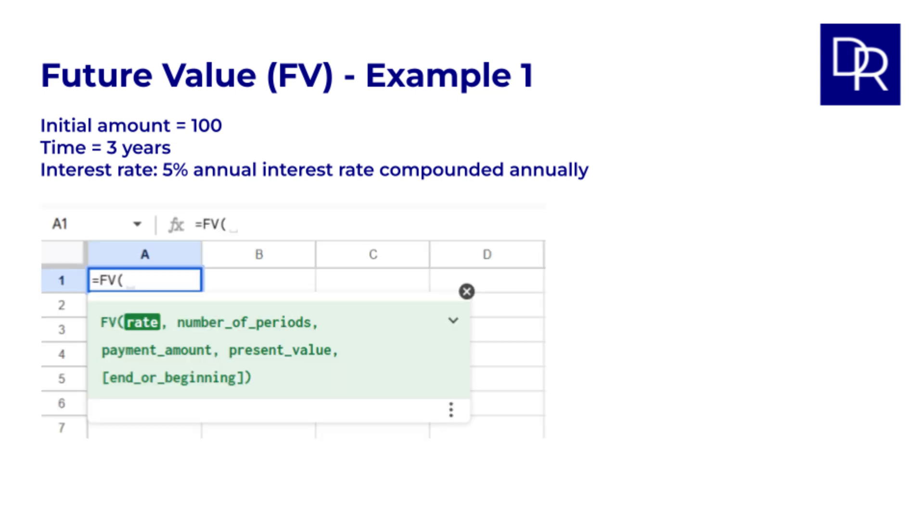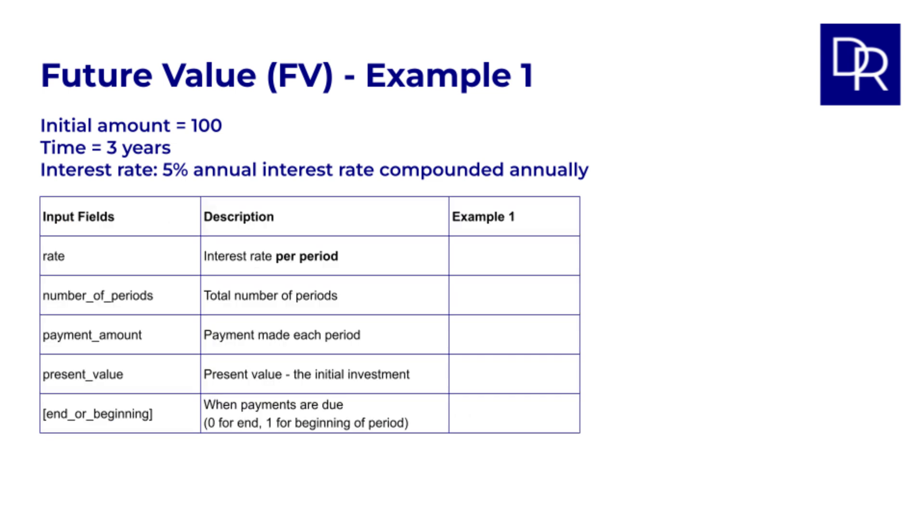In the spreadsheet we'll type equals FV open bracket. We can then see all of the input fields for the FV function as shown here. So rate is the interest rate per period. In our first example, the interest rate is an annual interest rate, 5%, and this is compounded annually. So here we can just put 5% as a decimal, so 0.05. The next field is number of periods. In this example everything is annual and there are 3 years, so that is 3 periods.